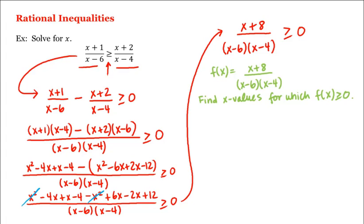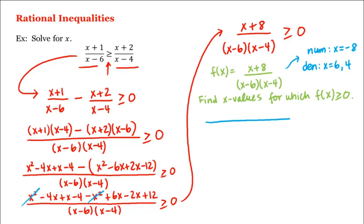So looking up here, the zeros of the numerator are x equal to negative 8. And the zeros of the denominator are x equal to 6 or 4. Now these three values partition the real number line into four intervals. So let's say this is negative 8, this is 4, and this is 6. What we'll do is choose a representative from each of these intervals and determine whether f is positive or negative within each interval, and then choose the intervals on which f is positive.